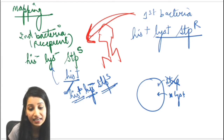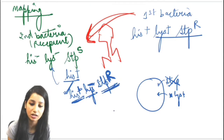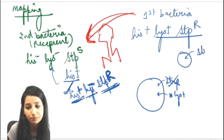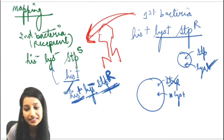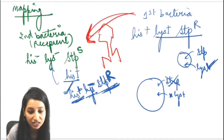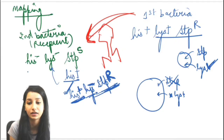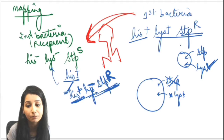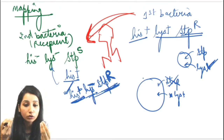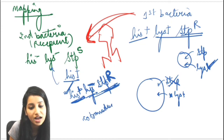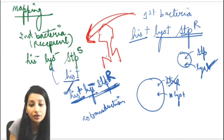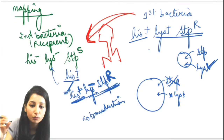Now consider if histidine and streptomycin resistance are transferred together, but not lysine. If I grow it on a plate with streptomycin and without lysine provided, this bacterium will grow. So histidine and streptomycin resistance were both transferred from the first bacterium to the second bacterium. This means histidine and streptomycin resistance are very close together on the chromosome — they can undergo co-transduction. Co-transduction is the transfer of genetic material together; if they are very close to each other, they will go together.